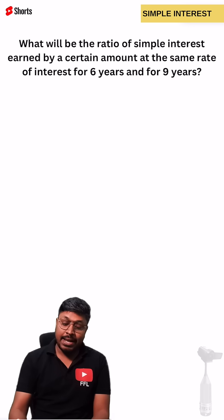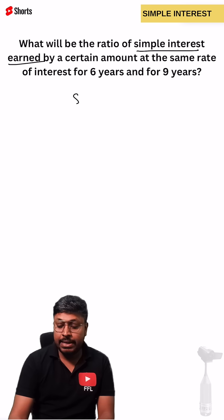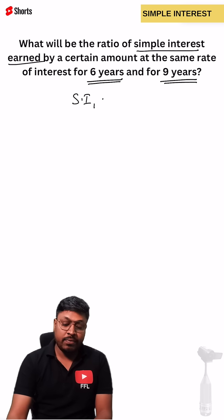Listen carefully. Our target is to find the ratio of simple interest. There are two simple interests because they have calculated interest for 6 years and 9 years. We have to find the ratio of simple interest 1 to simple interest 2.